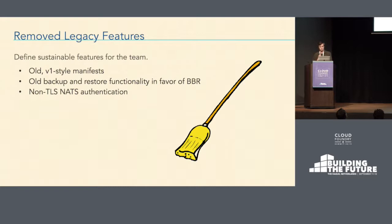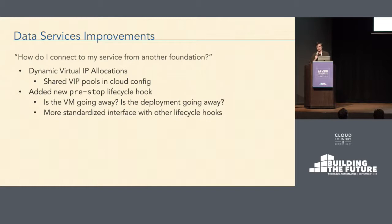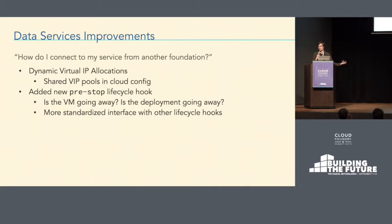We've also been improving our story around data services. The first interesting one is dynamic virtual IP allocation. The idea is: what happens if you have two foundations or two BOSH deployments spread across data centers that need to communicate with each other? You want them to have public virtual IPs so they can address each other, but it gets difficult when you have to manually assign them to instance groups ahead of time. This moves the concept into the cloud config similar to other networks, so now you can define an array of virtual IPs in your cloud config and BOSH will auto-assign those to instances, enabling larger-scale communication across data centers.